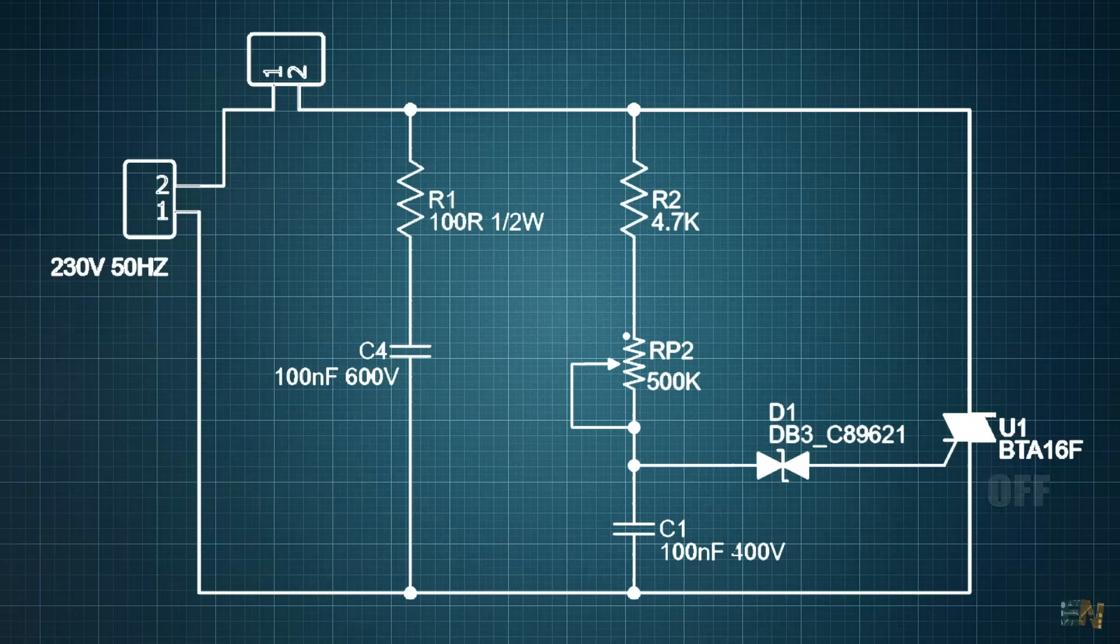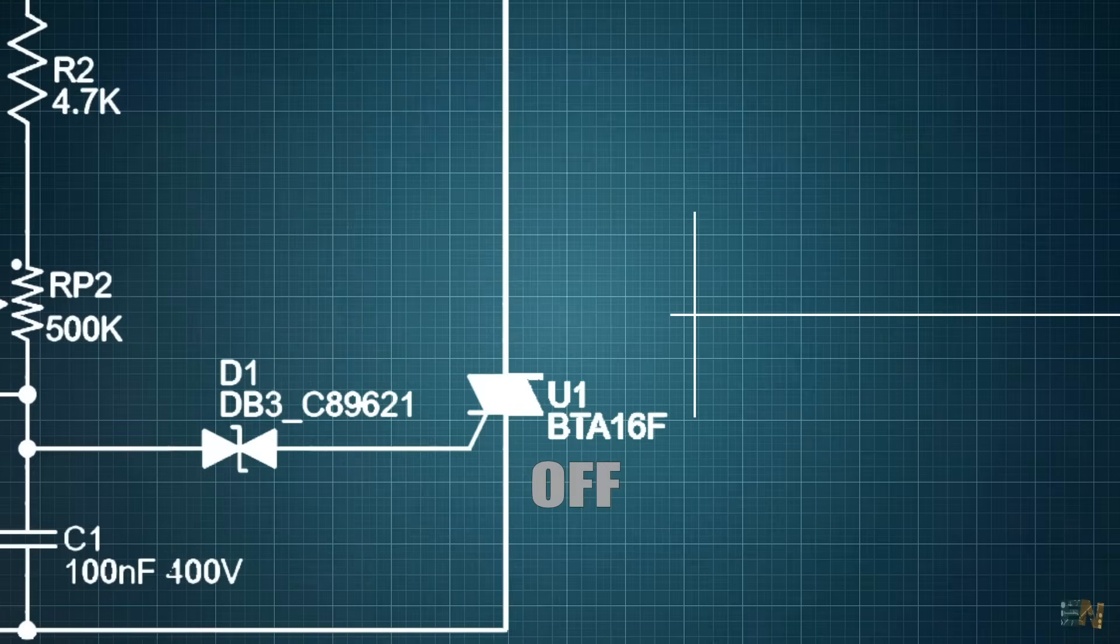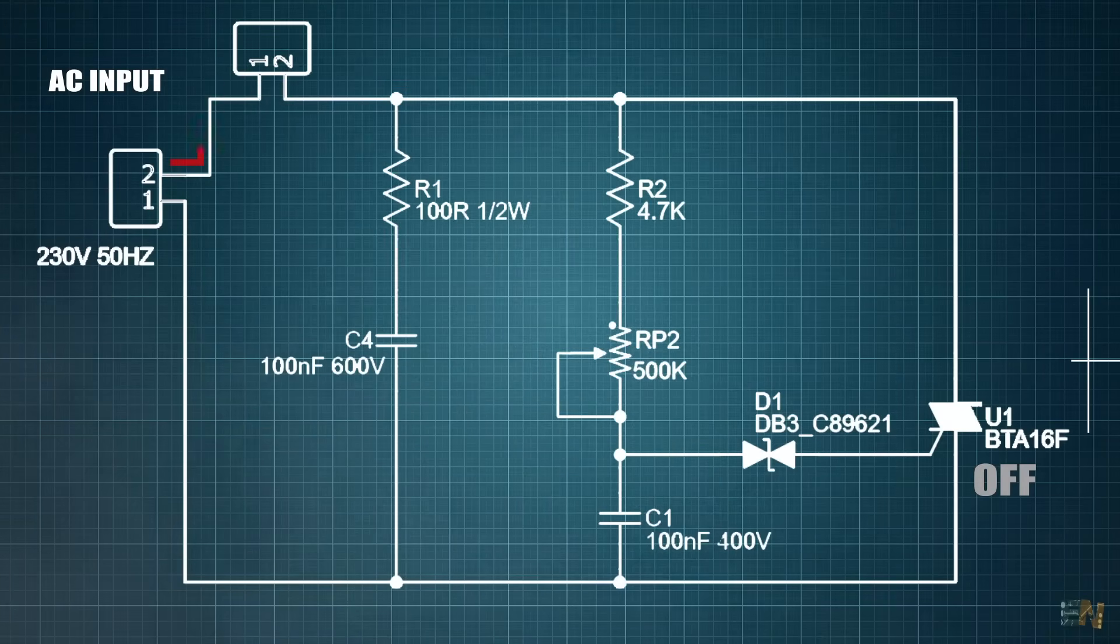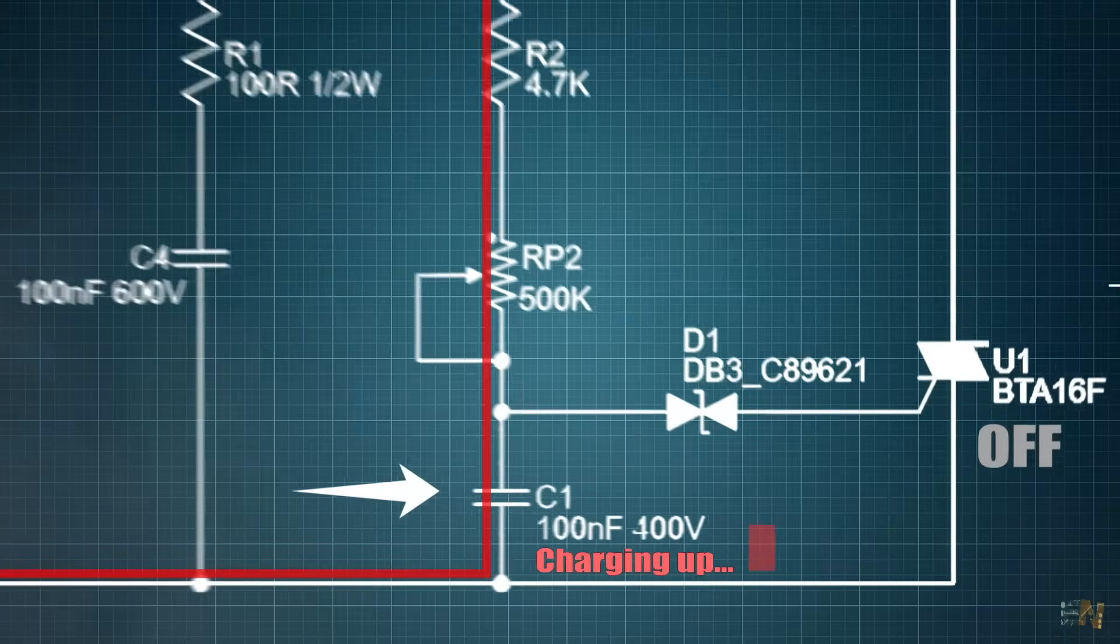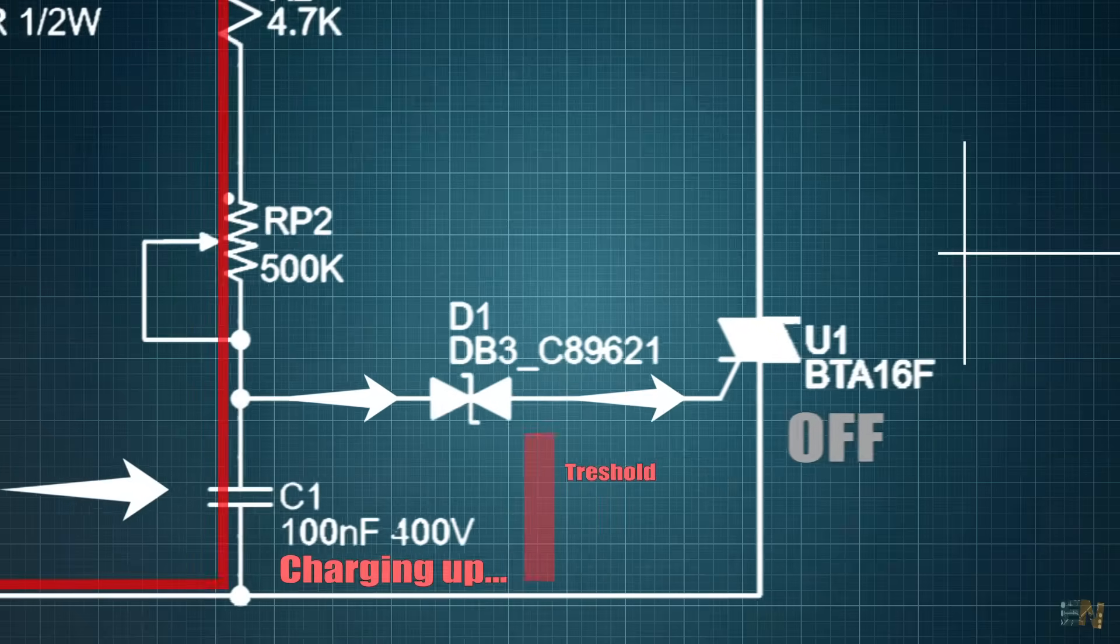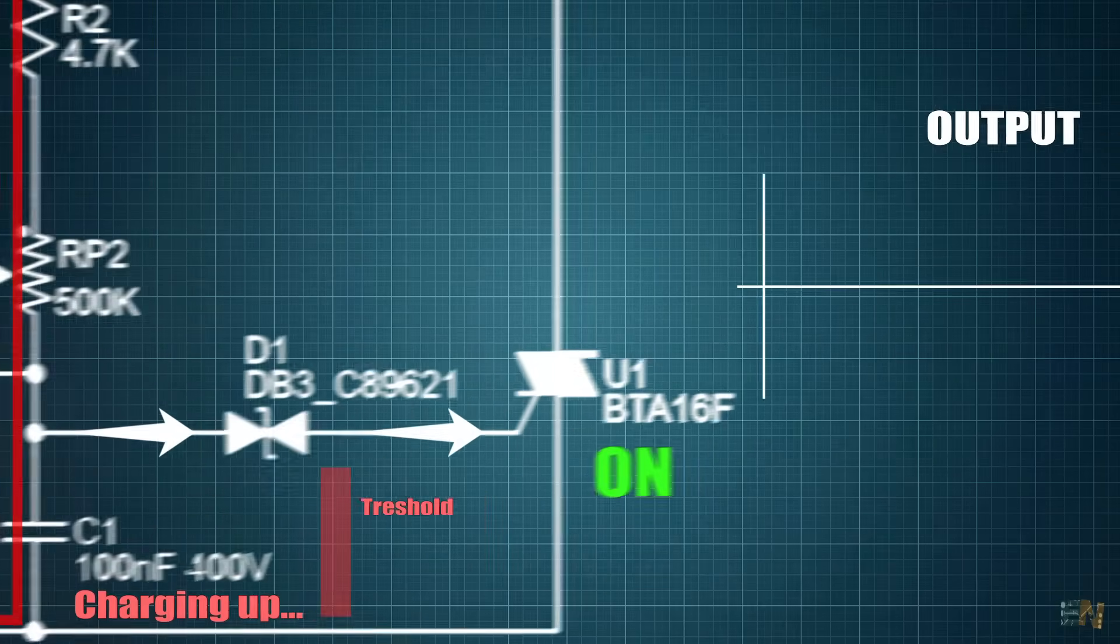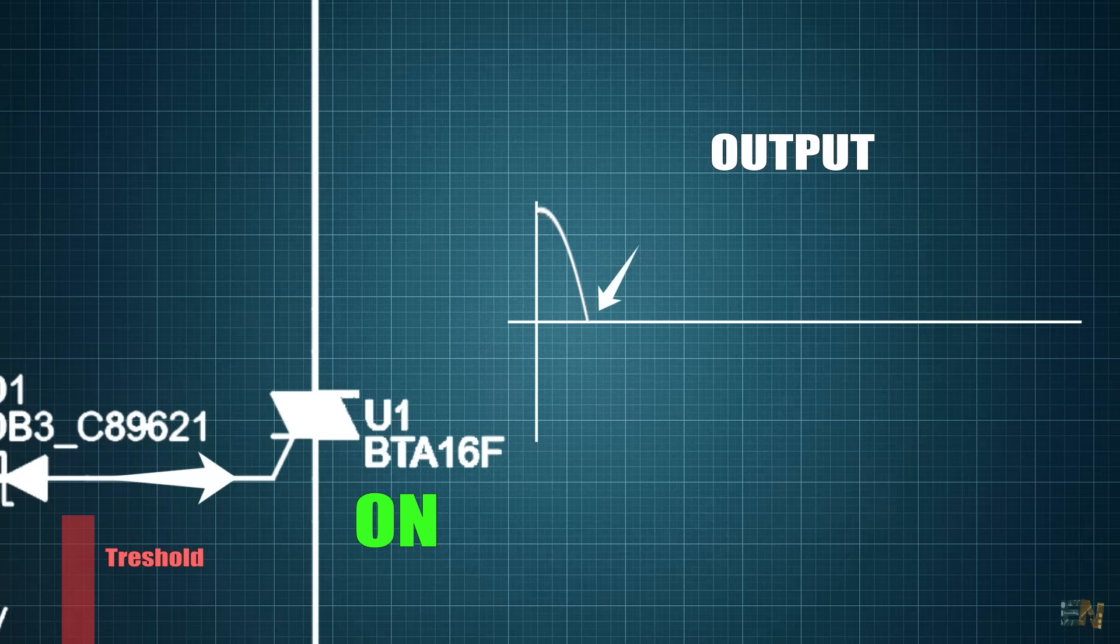So we start with everything powered off and we apply the AC voltage at the input. Since the triac is off, the output is still zero. But we have a small current flow through here and this capacitor is charging up. When the value of the capacitor reaches the threshold value of the diac, this will allow the current to flow towards the gate of the triac and that's what activates it. So now the output is like this, till the AC voltage changes polarity and the triac is off again.